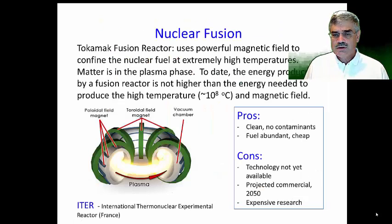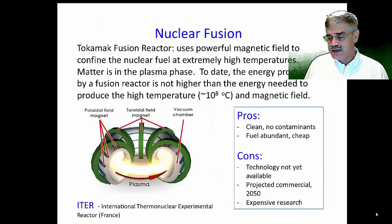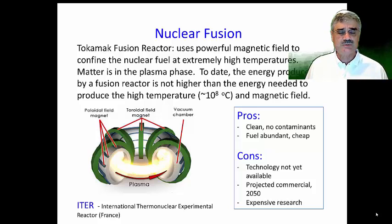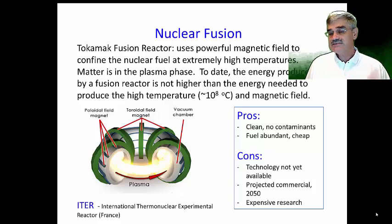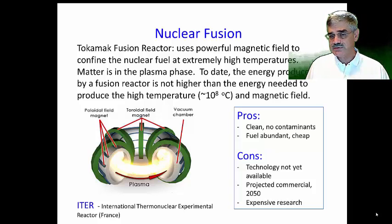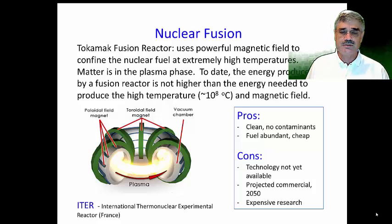The nuclear power plants in use today are based on the nuclear fission model. In the United States, 15 to 20% of electricity is generated with nuclear power, while in some countries such as France, as much as 80% of electricity comes from nuclear power.